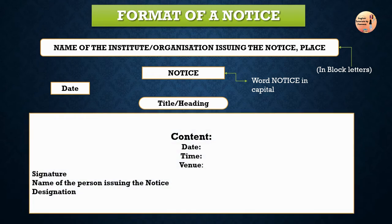After writing the eye-catching heading or title, we come to the very important part of notice writing — the body of the notice. A well-written notice must inform the readers about what, when, where, who and whom: what is going to happen, where it will take place, when it will take place, who can apply or is eligible to attend, and whom to contact or apply to. The body tells us what is going to happen, where, when, who can attend, and who to contact for more information.